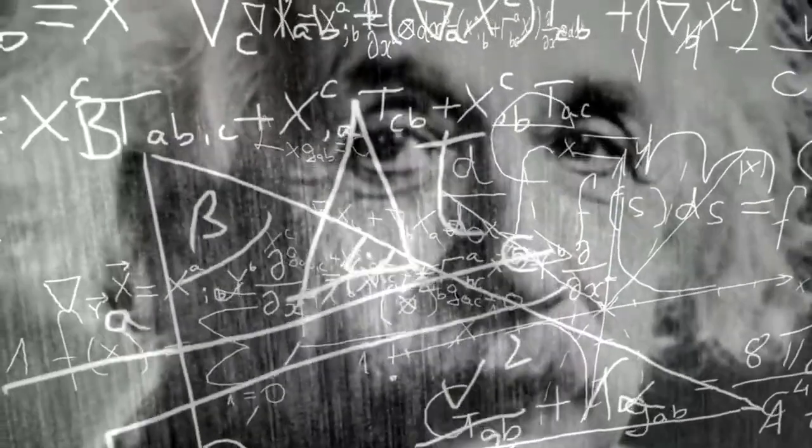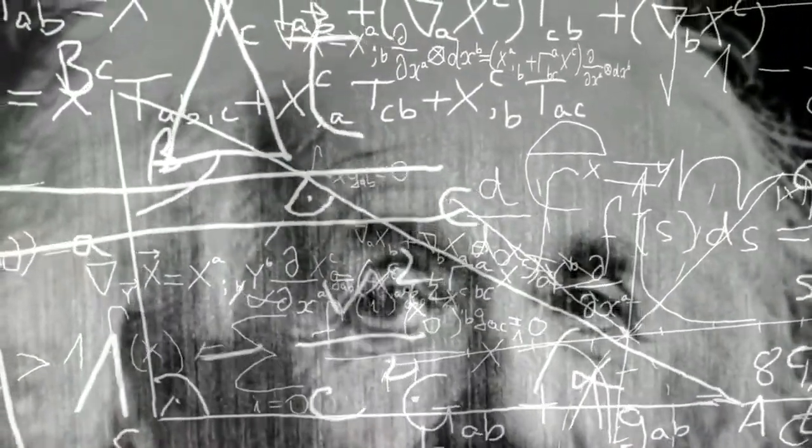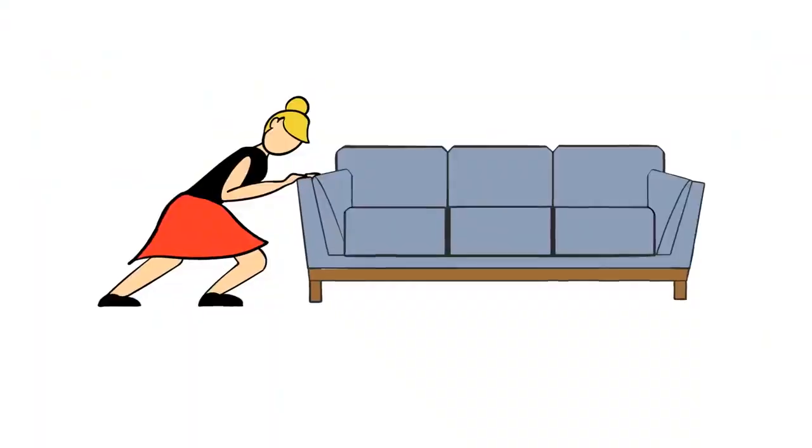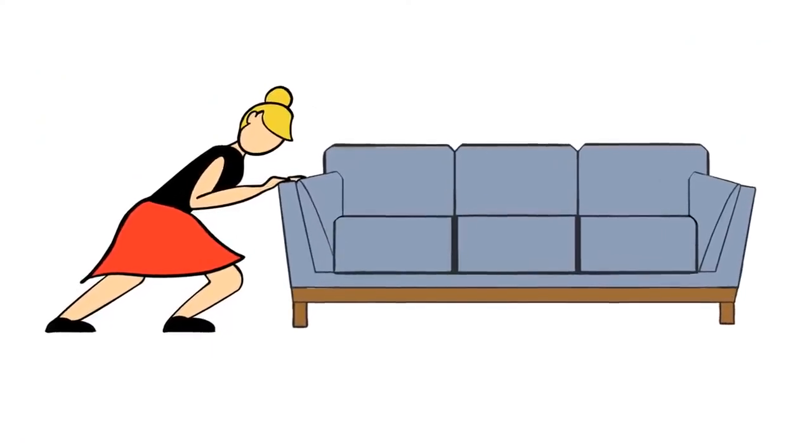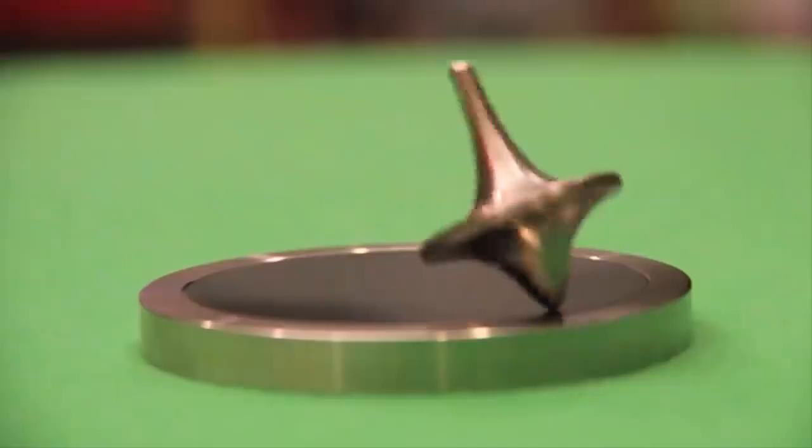Friction is where something rubs on or drags on an object and takes energy away. Have you ever slowed yourself down while you're riding downhill by dragging your foot on the ground? That's friction. There's not much friction in a fidget spinner toy. That's why they can spin for so long.